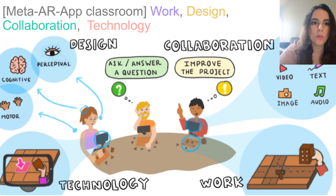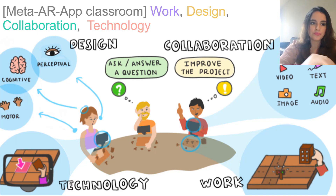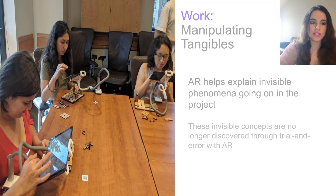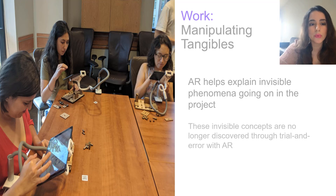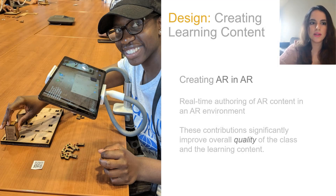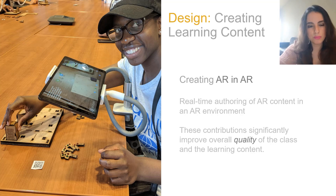Our discussion centers around what a classroom implementing MetaIRAP looks like. We organized our class model into four categories based on our user studies: work, design, collaboration, and technology. Regarding work and manipulating tangibles: AR is really helpful to visualize abstract concepts, and students took advantage of that. Students in the local and global conditions made sure to share anything they felt wasn't shown, like current or polarity, so these became visible rather than just trial-and-error procedures. Regarding design and creating learning content: this implementation of the pool-based model gave instructors and students the valuable tool of creating AR content in an AR environment in real time, pending approval from a moderator, which made the quality of the class much better.